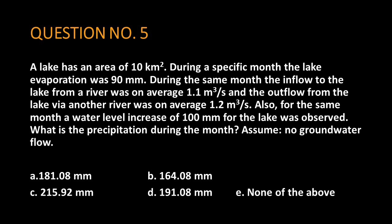Also, for the same month a water level increase of 100 millimeters for the lake was observed. What is the precipitation during the month? Assume no groundwater flow.